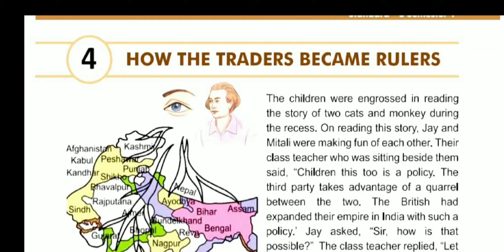Hello students, welcome back. Today I am going to explain Grade 8, Chapter 4: How the Traders Became Rulers. In the first chapter we already discussed how initially the British and other countries came to India for trading purposes. In this chapter we will discuss how these traders became the rulers.